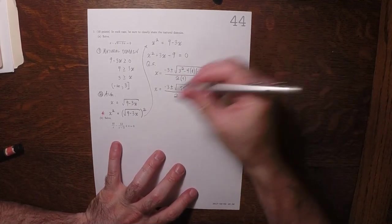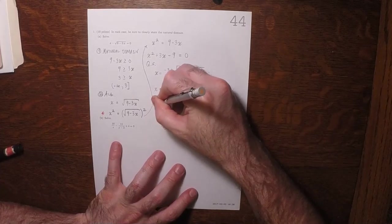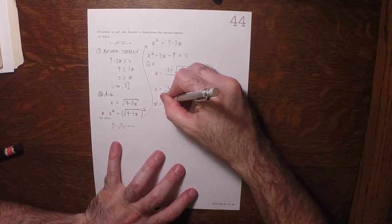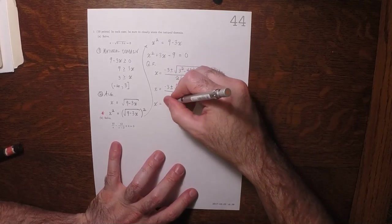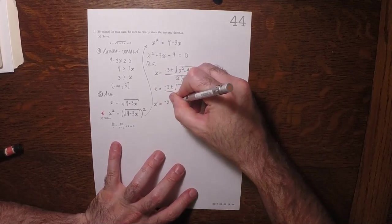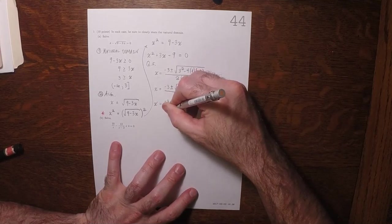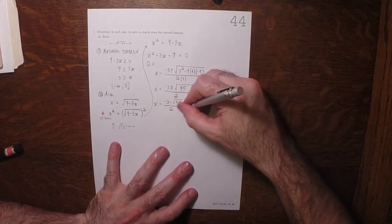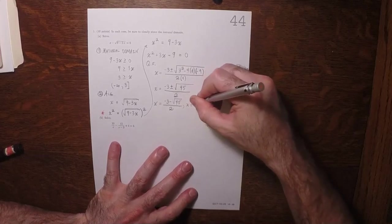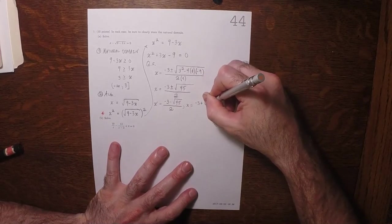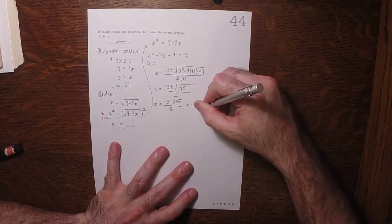That's 4 times 9 which is 36 plus another 9 would be 45 over 2. So the two answers are negative 3 minus the square root of 45 over 2, and negative 3 plus the square root of 45 over 2.